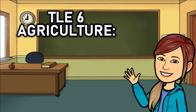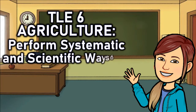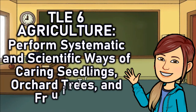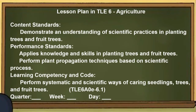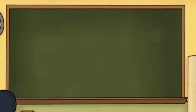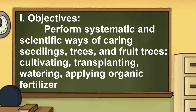TLE 6 agriculture: perform systematic and scientific ways of caring for seedlings, orchard trees, and fruit trees. Objectives: perform systematic and scientific ways of caring for seedlings, trees, and fruit trees — cultivating, transplanting, watering, and applying organic fertilizer.